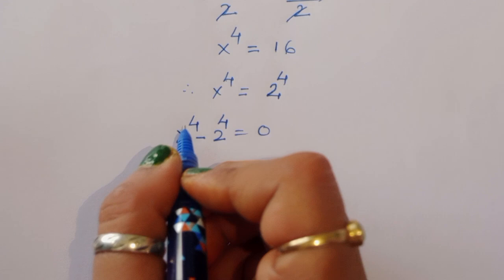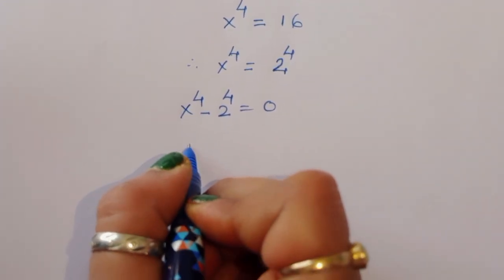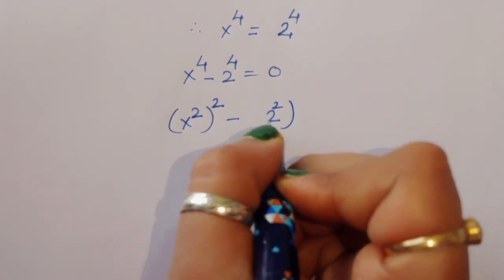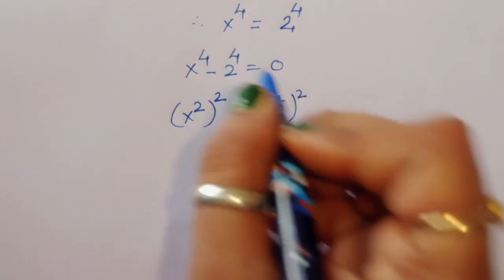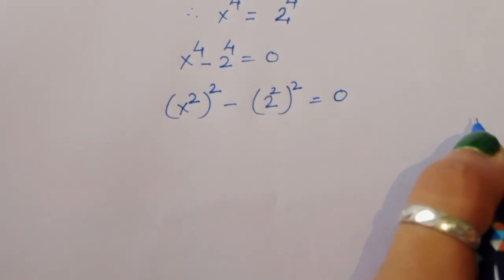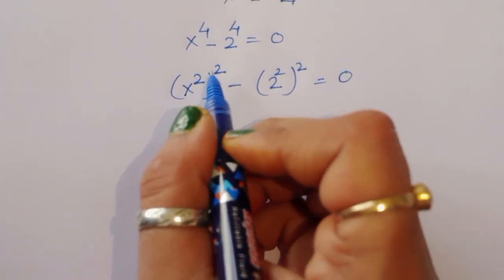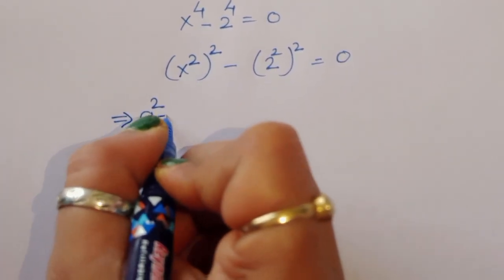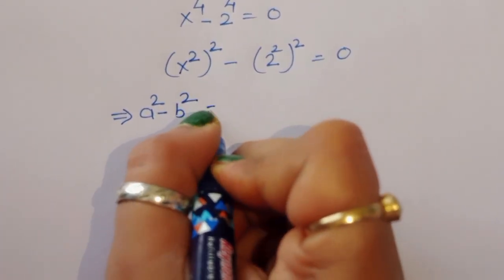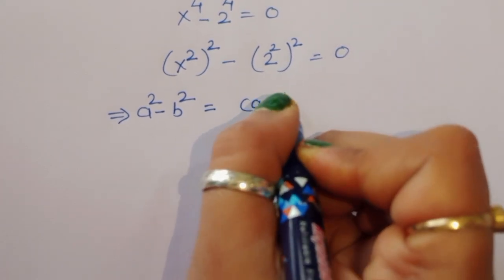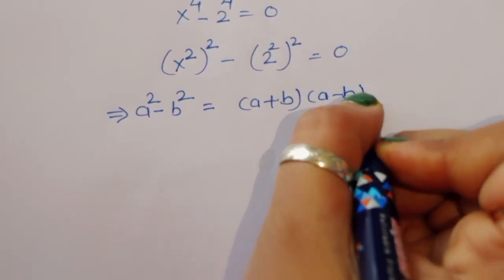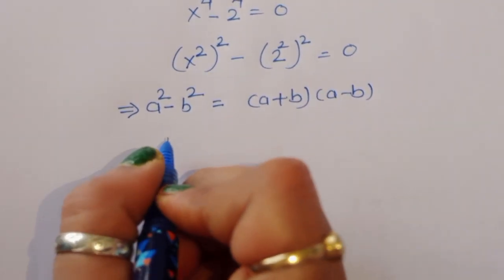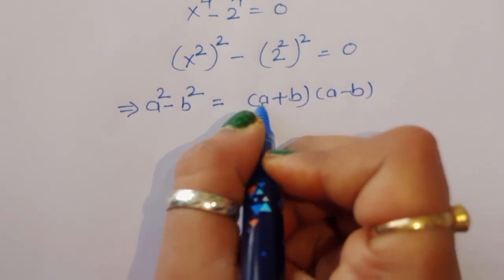We can write x⁴ as (x²)² and 2⁴ as (2²)². So we have (x²)² minus (2²)² = 0. This is in the form a² minus b², and we know a² - b² = (a + b)(a - b).